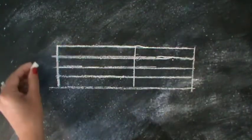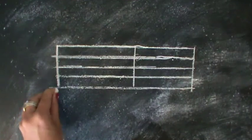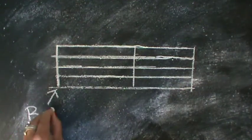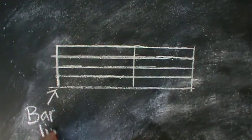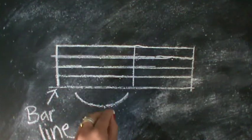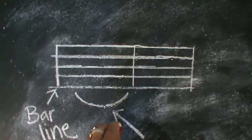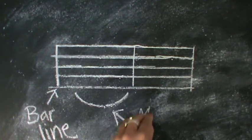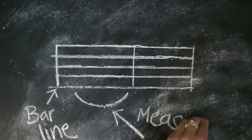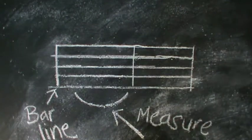In a piece of music each line is separated by bar lines, and in between each of these bar lines is a measure. You can think of the bar lines like the space between words in a language, and so each measure would be a word.